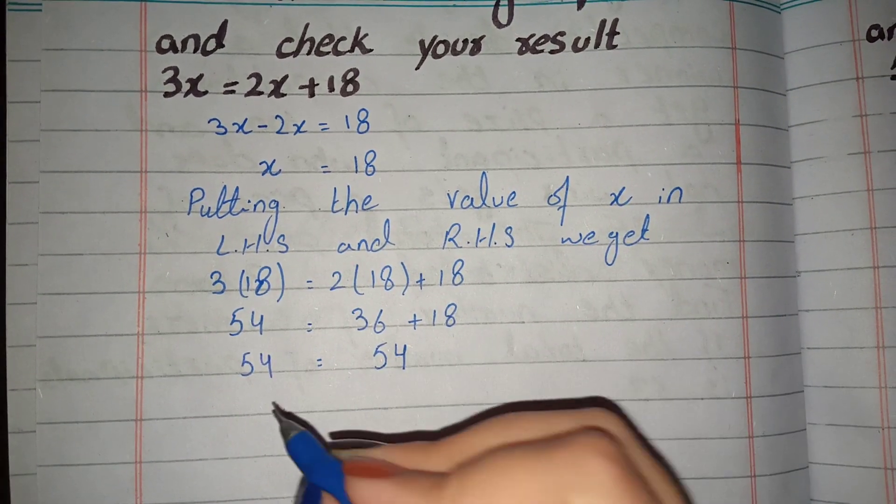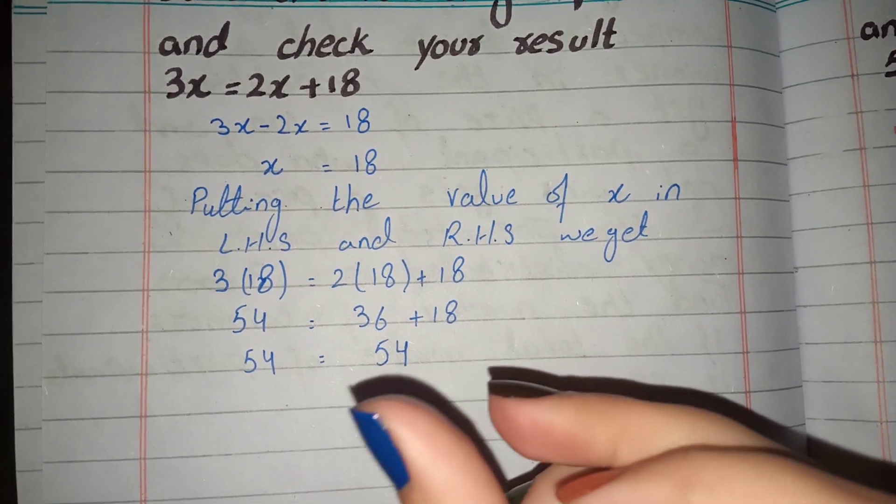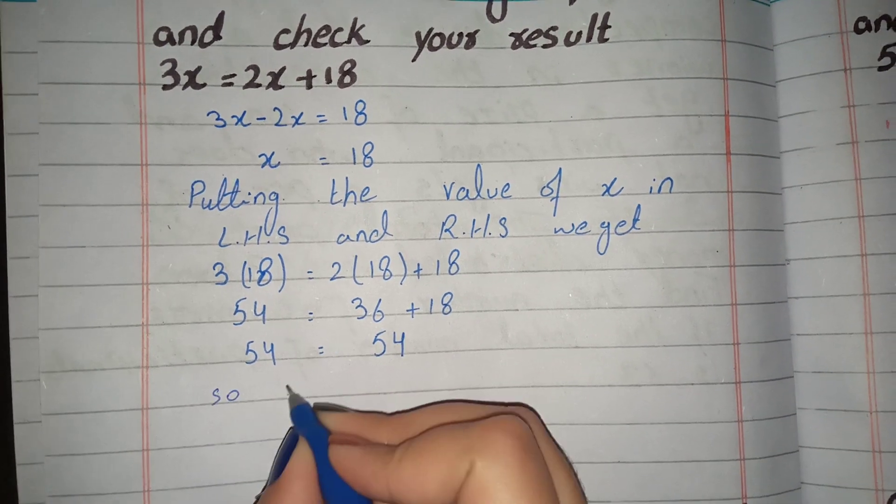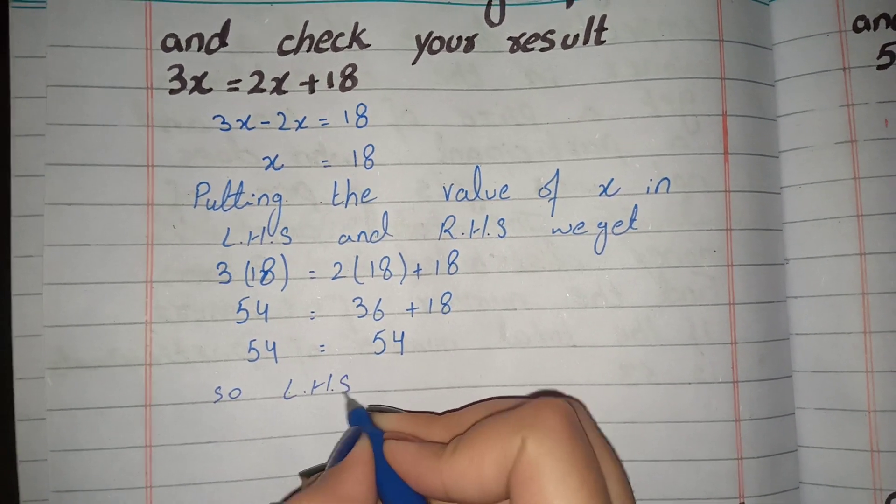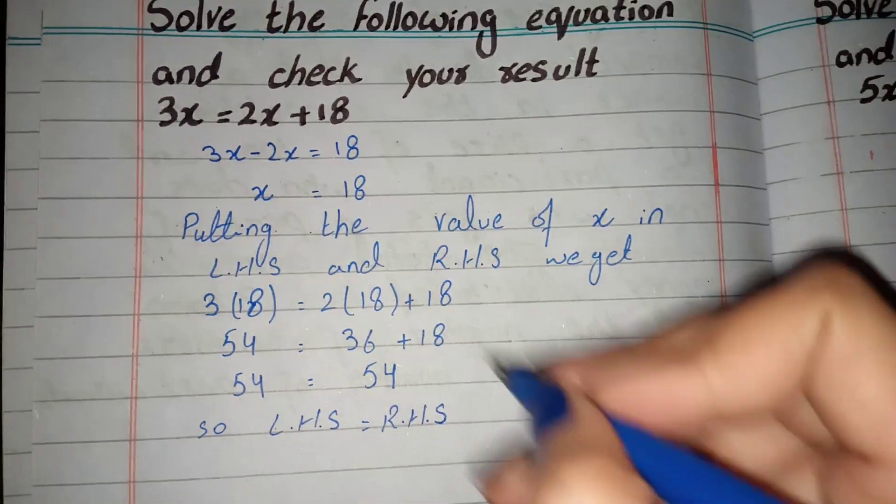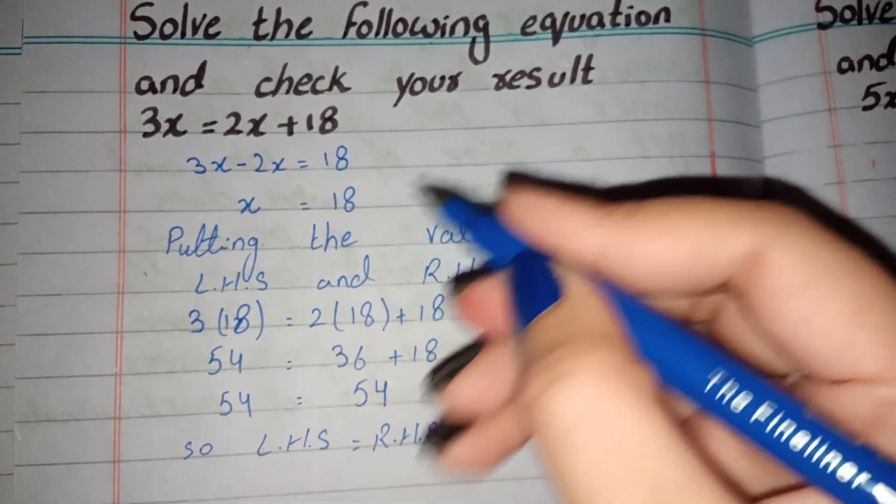We have both left hand side equal to right hand side. Left hand side equals right hand side. What does this mean? We have checked that if left hand side equals right hand side, this means that you have the right answer.